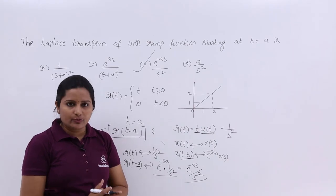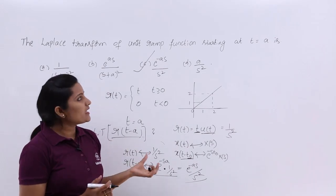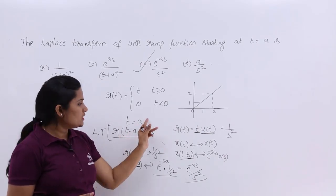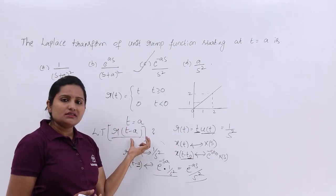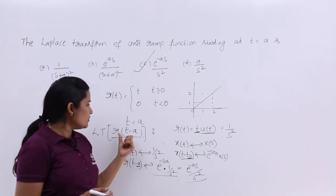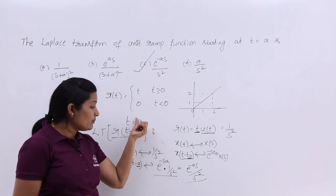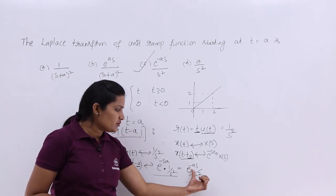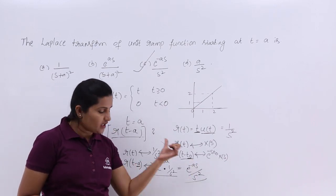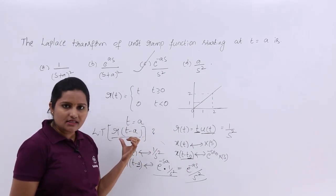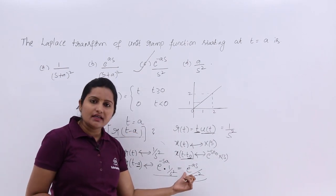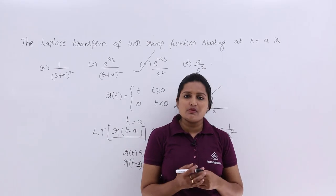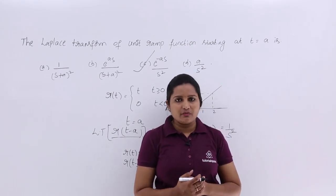By applying the time shifting property you get a quick solution for this type of question. When they ask for a ramp starting at T equal to A, that is R(T minus A). You just send the value to the other side to get the ramp function. For example, if they give T equal to minus A, then your ramp will be R(T plus A), and the transform will be e power plus AS by S square, not minus A. Like this, you can get simple solutions for gate problems by using the time shifting property of Laplace transforms.